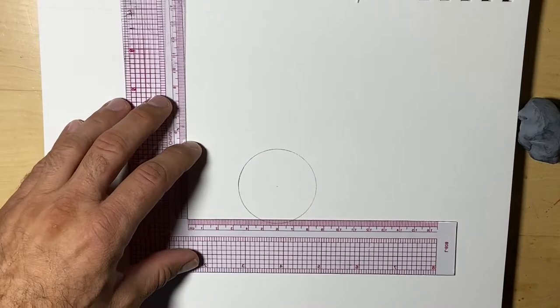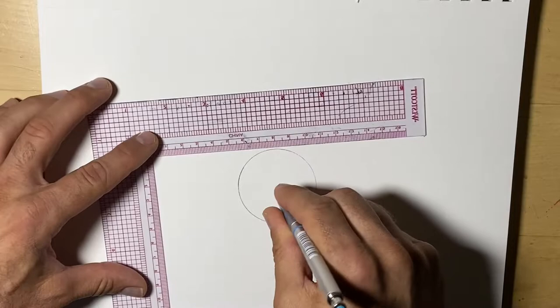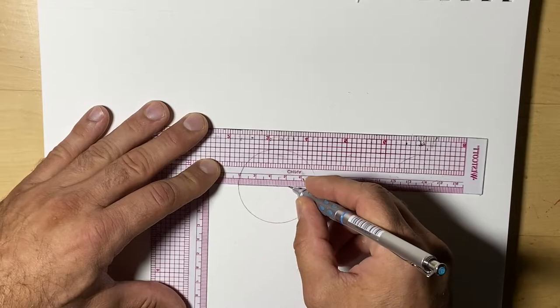Now, if we wanted to cheat the second step, we can actually use one of these T rulers. So I'm going to put the pencil on the center of the circle and then draw the line. It tends to be more accurate. That way it guarantees that you go exactly through the center.